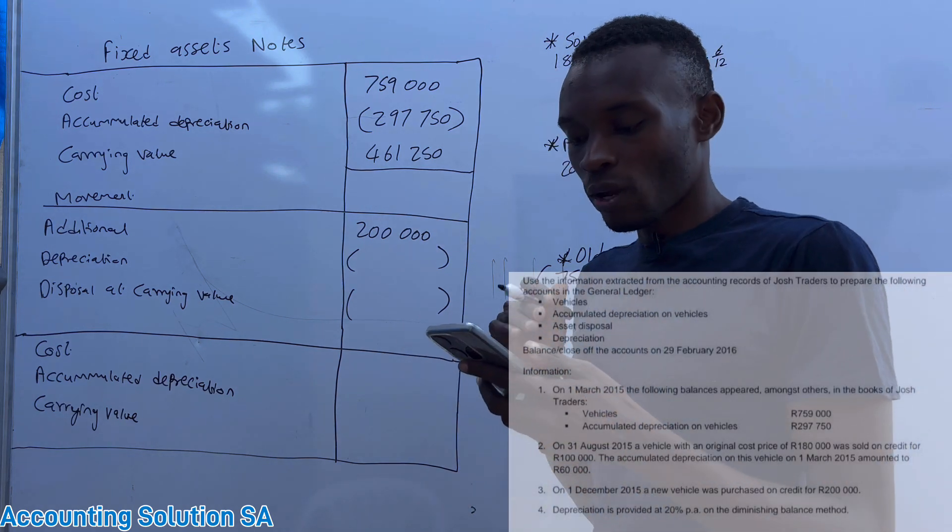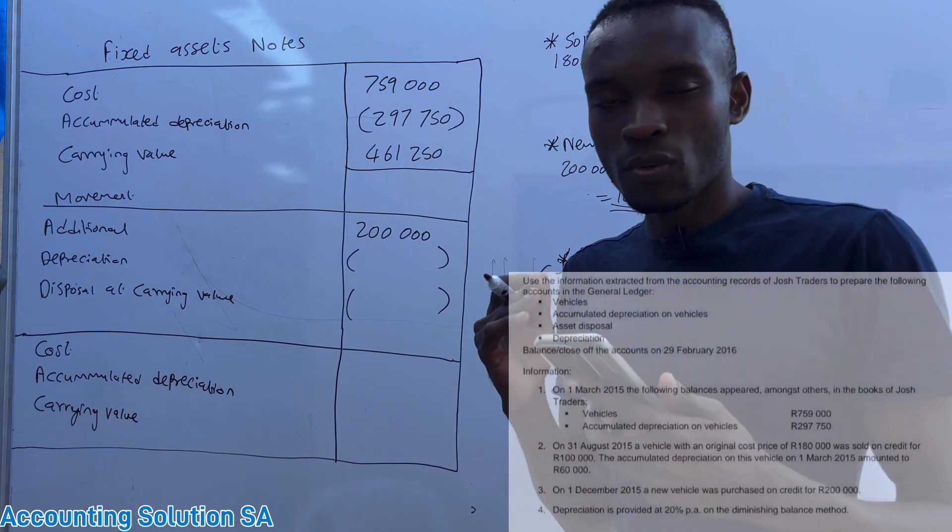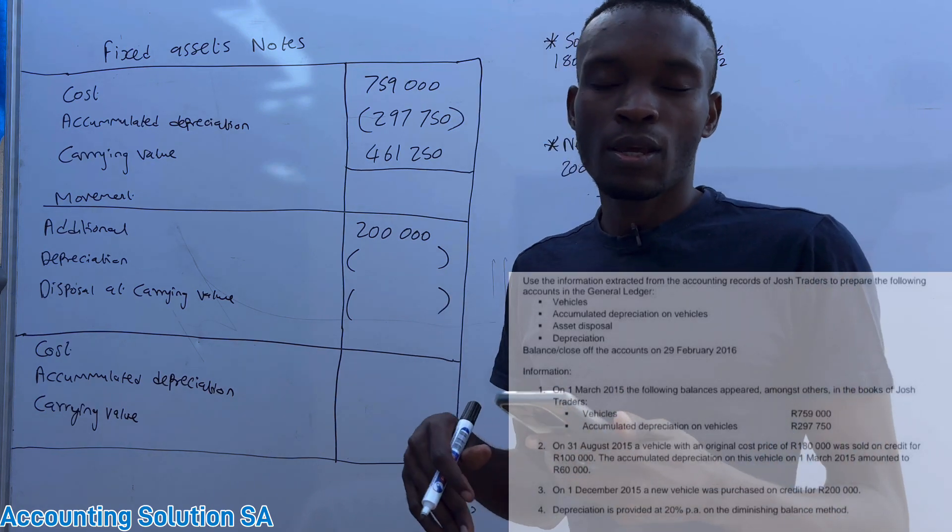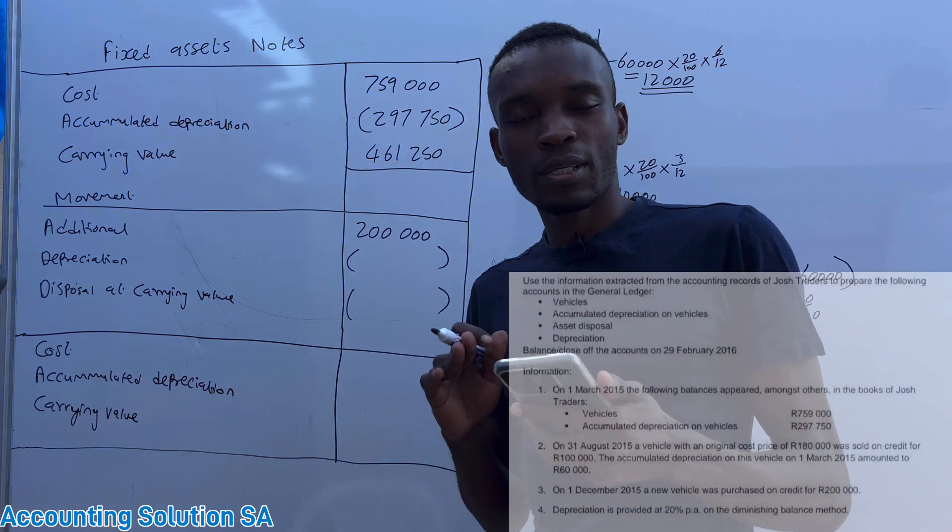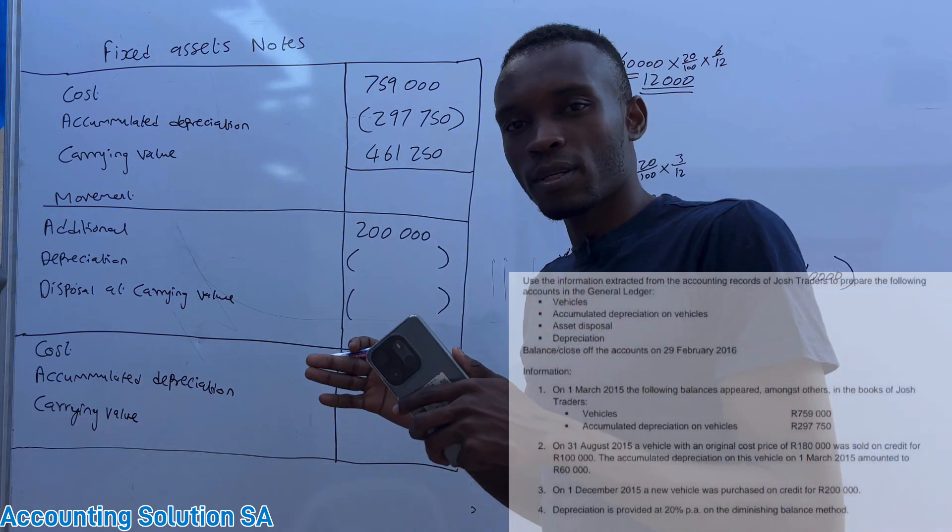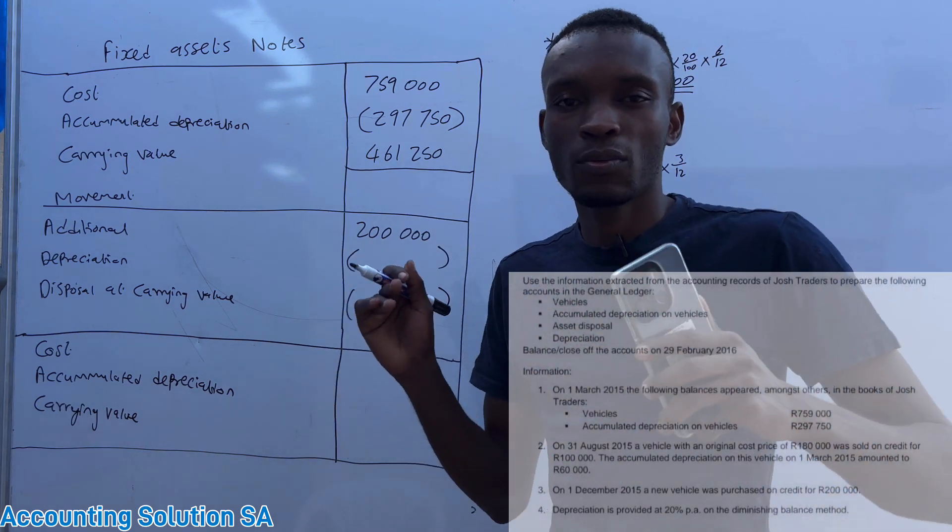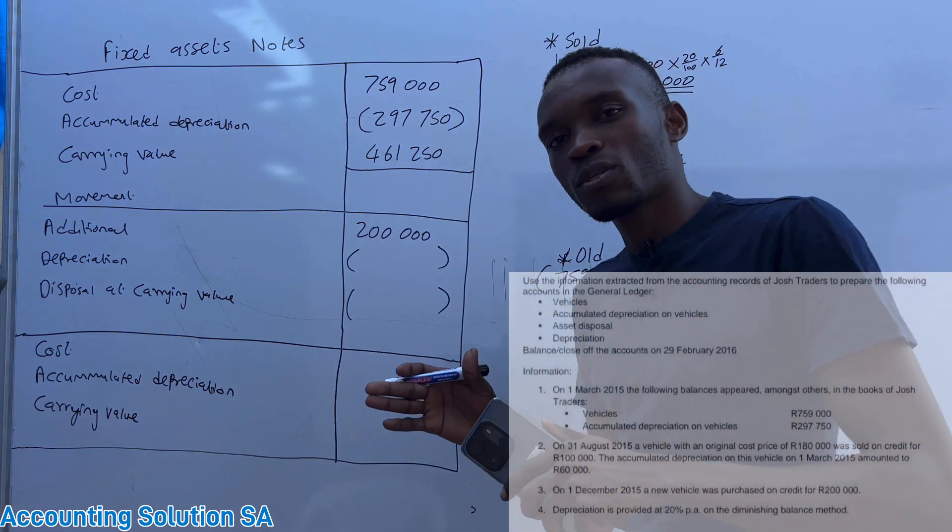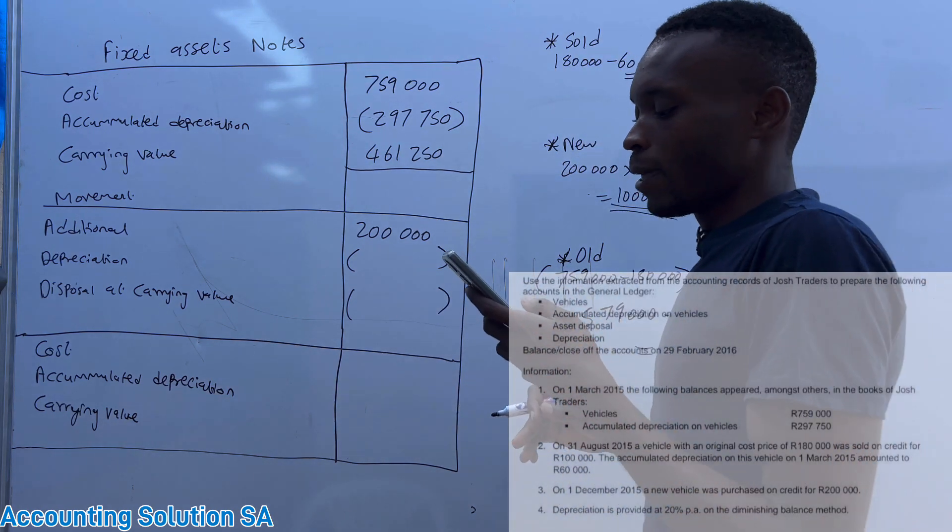They said that we have to use diminishing balance method. When we say diminishing guys, simply means that when you calculate the percentage of depreciation, you must first take cost minus accumulated depreciation, then you will get carrying value and you proceed with your calculation.